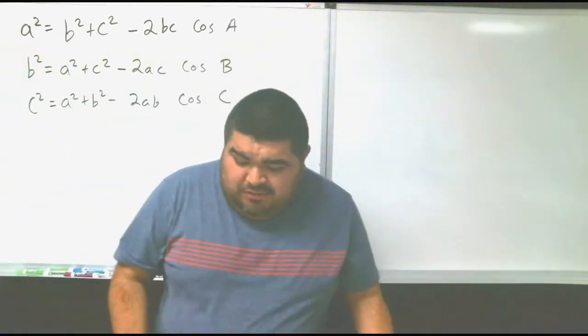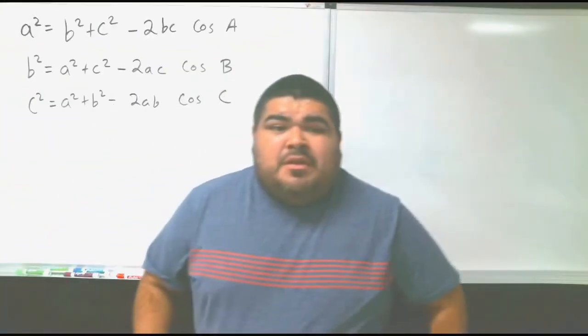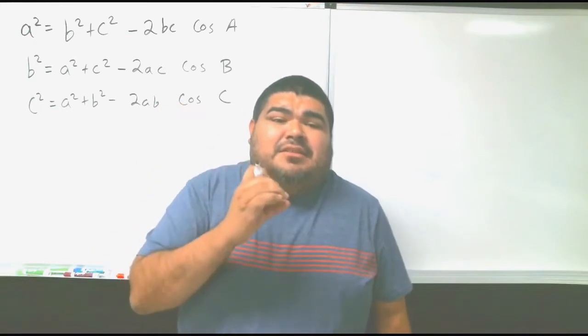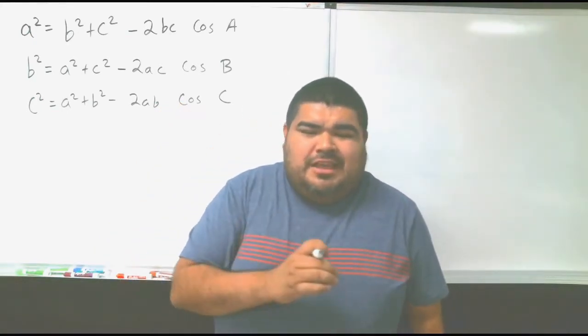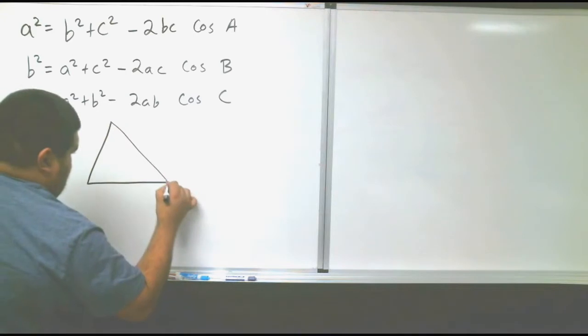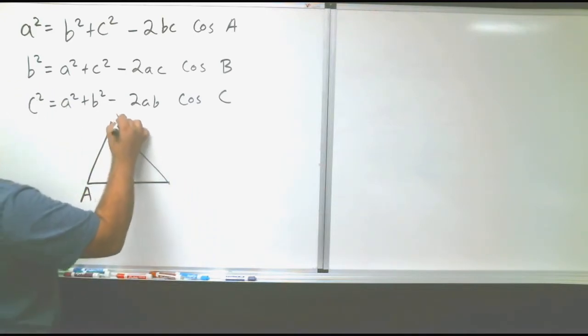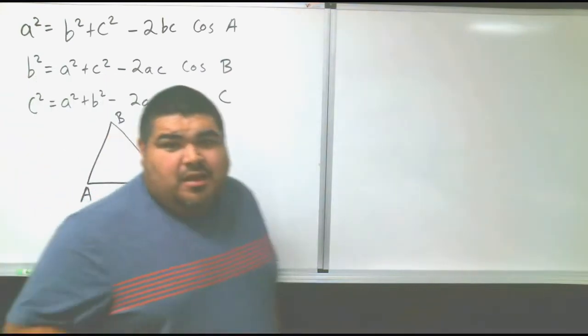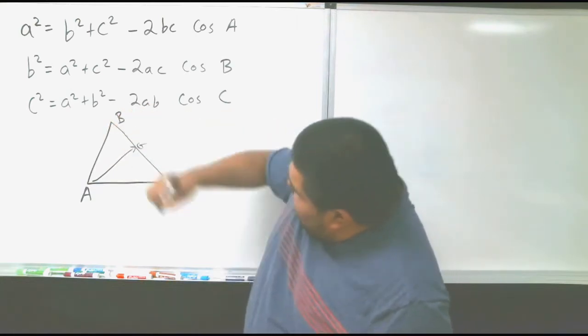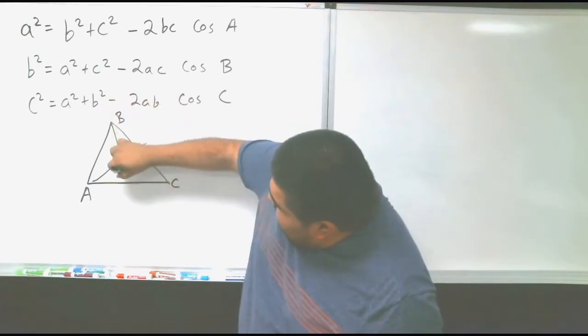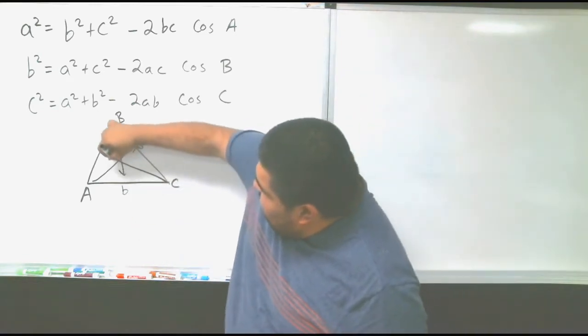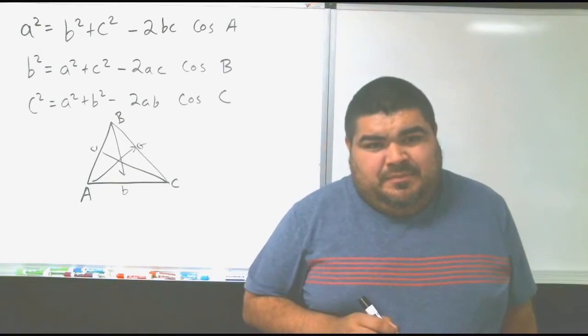If you guys remember on the previous concepts, always across from capital B on the side, if the angle is capital A on the side it's lowercase a. If you guys remember our triangle, if you have capital A, capital B, and capital C, across from A on the side is little a. Across from B is little b. And across from capital C is lowercase c.